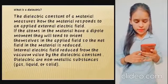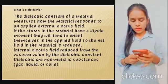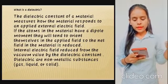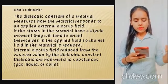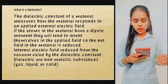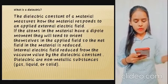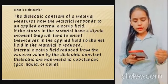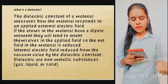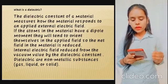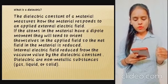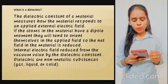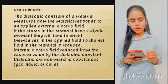What is a dielectric? A dielectric consists of a material that measures how a material responds to an applied external electric field. If the atoms in the material have dipole moments, they will tend to orient themselves in the applied field so that the net field in the material is reduced. The internal electric field reduced from the vacuum value by the dielectric constant. A dielectric is a non-metallic substance.